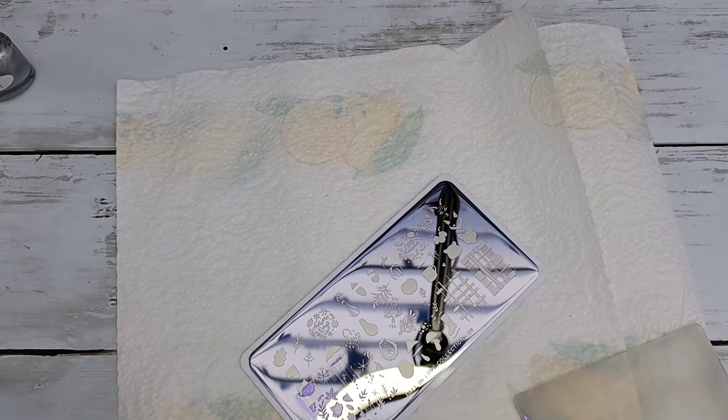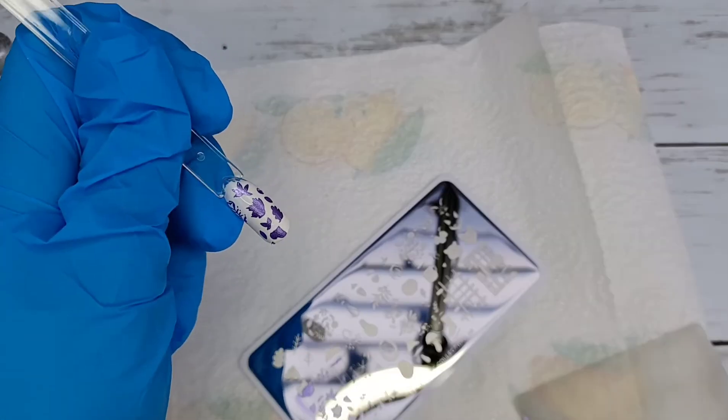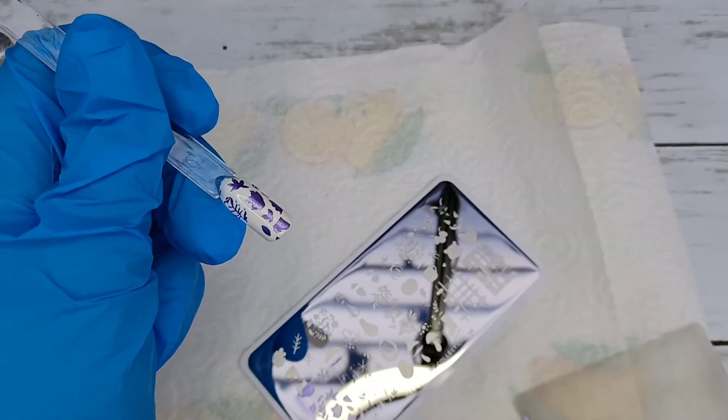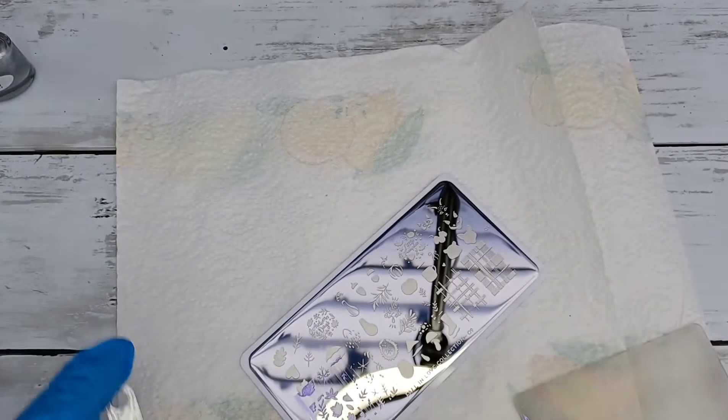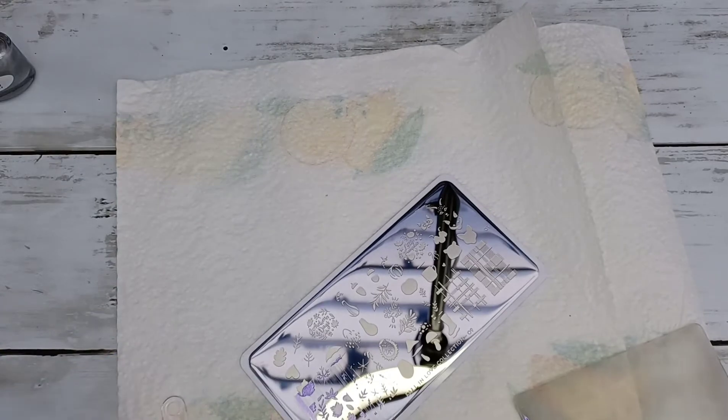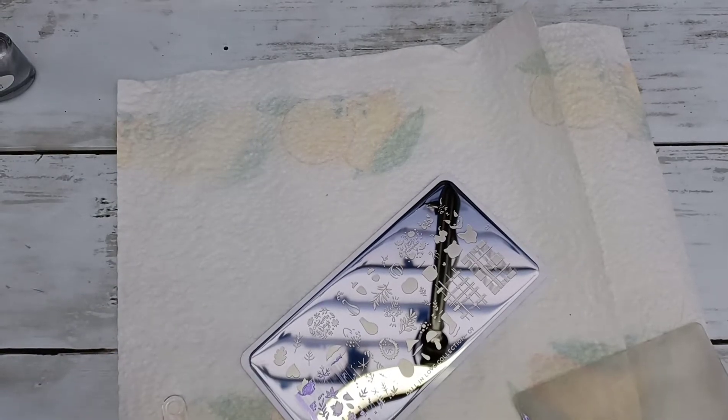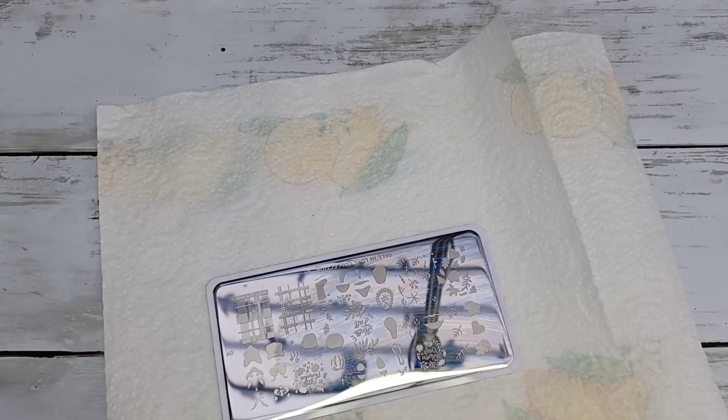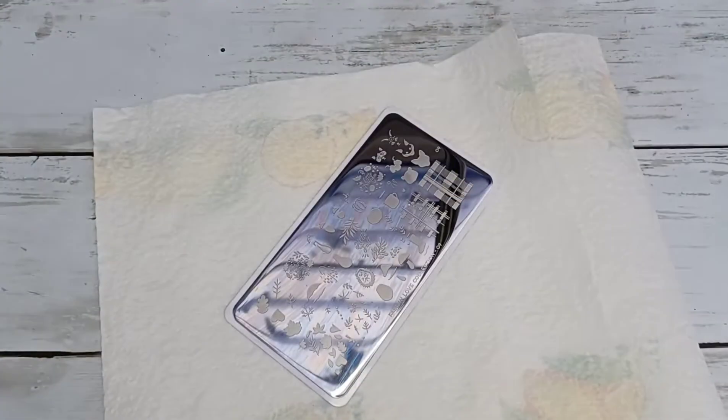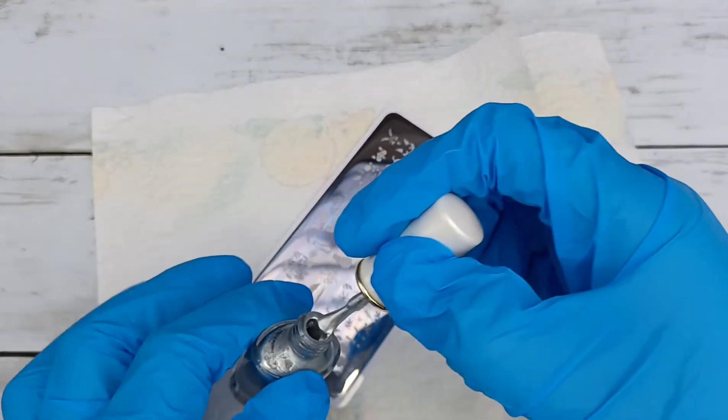I'm kind of feeling these stamping polishes guys, look at that purple and that was so easy, picked up amazing and it was so easy to use. And then for the next bit I think I'm going to just do it in silver and we'll just keep it nice and metallic.